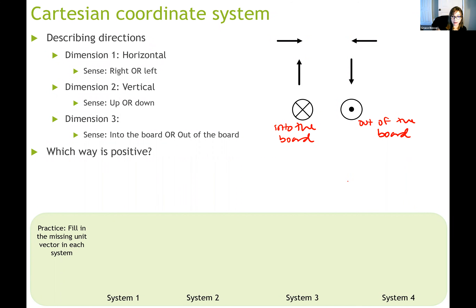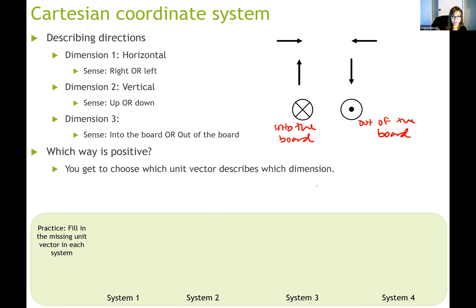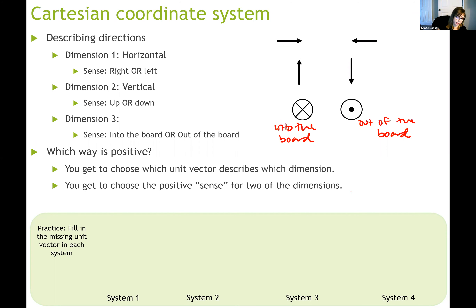You might ask which sense is positive and which is negative. The answer is you get to choose two of them, and the third is defined by the right-hand rule. You can assign x-hat as horizontal and y-hat as vertical, and choose whether right or left is positive and whether up or down is positive. That third dimension's positive sense is then defined by the right-hand rule.